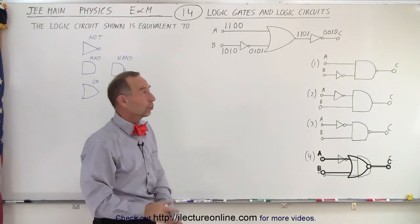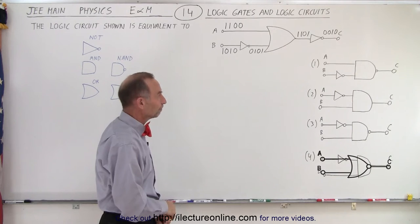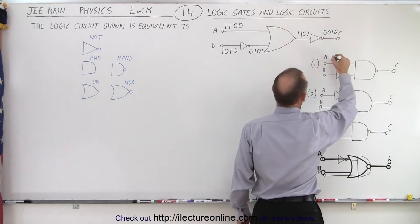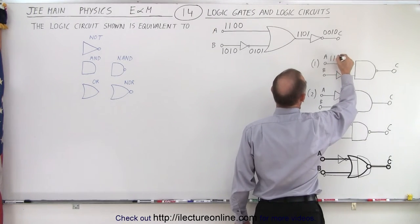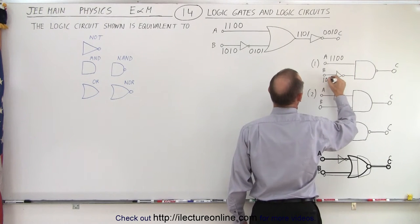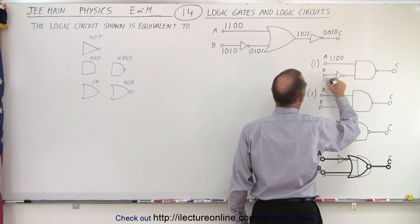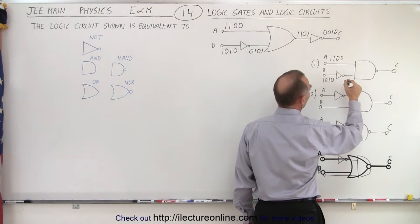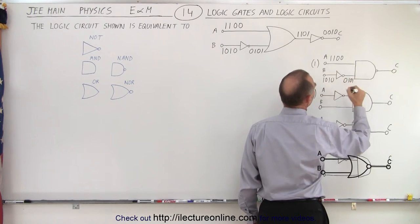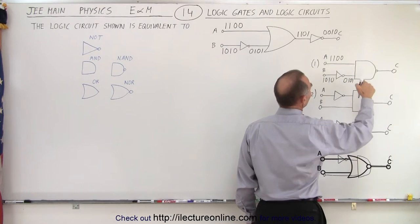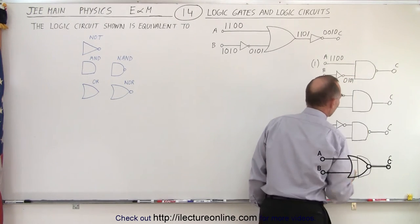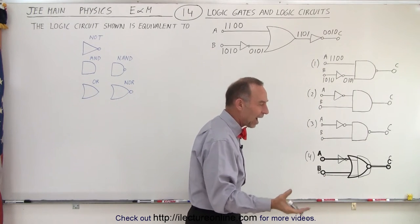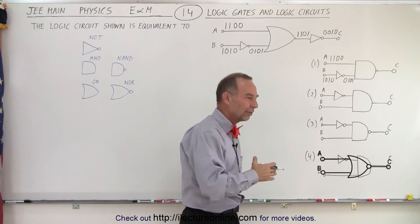To find which circuit matches, we use the same input combinations: top input 1, 1, 0, 0 and bottom input 1, 0, 1, 0. For circuit A, the NOT gate on the bottom turns 1, 0, 1, 0 into 0, 1, 0, 1.